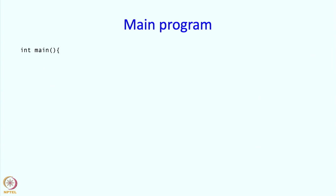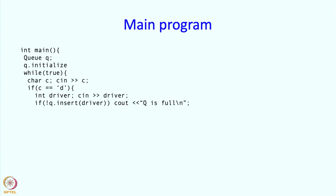What does our main program look like? We create a queue, the struct, and then we initialize it. There should be parenthesis there, that's a typo. Then there is a loop. We read in the command which the operator gives. If it is a D, then we get the driver details and try to insert it into the queue.